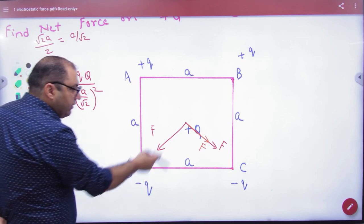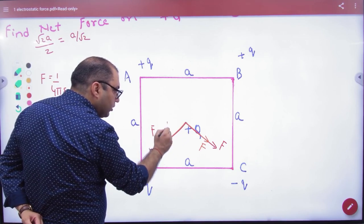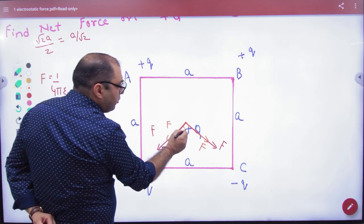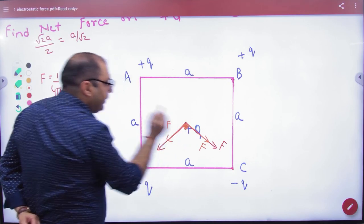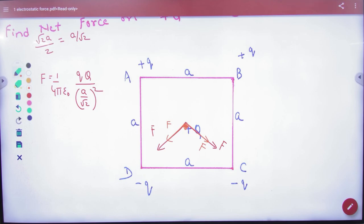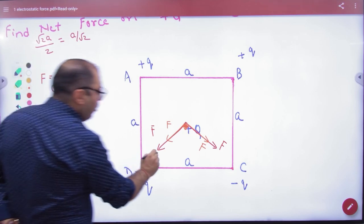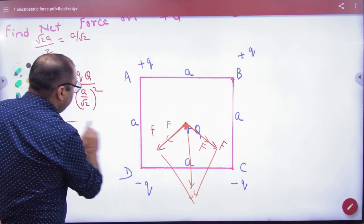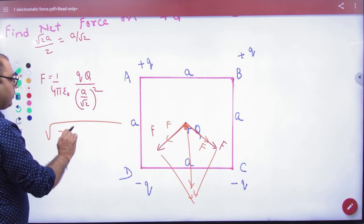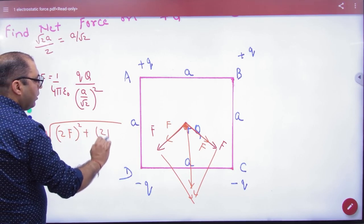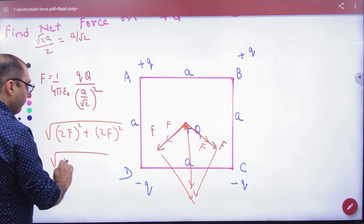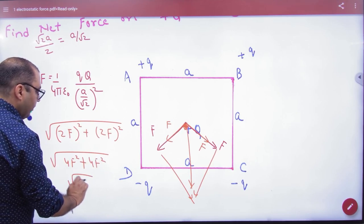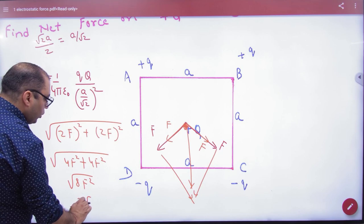Okay, attraction, attraction. Now because it is square so what will be this angle? 90 degrees. This is clear so the parallelogram law of vector addition will give net vector with magnitude under root of 2f square plus 2f square, that is 4f square plus 4f square yaani ki 8f square yaani ki 2 root 2f.